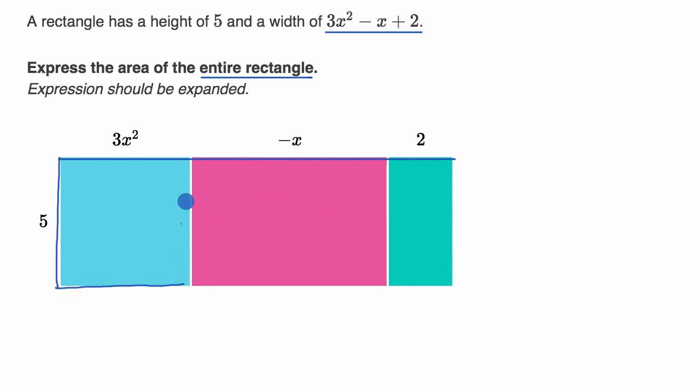You have this blue area right over here where the width is 3x², the height is 5. So what's that area going to be? Well, it's going to be the height times width, 5 times 3x², and that's the same thing as 15x².